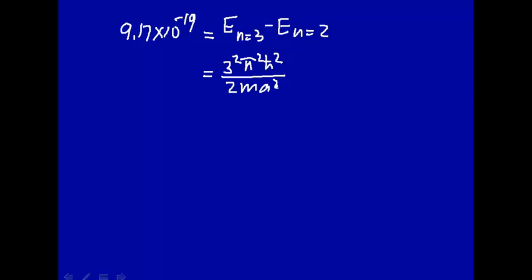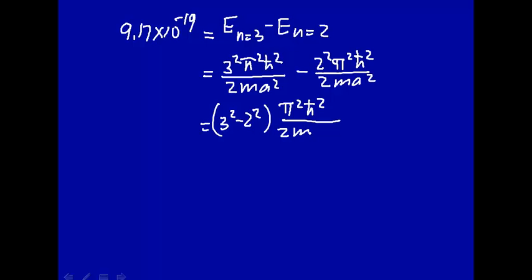So let's go ahead and do that. The experimental energy was 9.17 times 10 to the minus 19th, everything in SI units, so I won't have to carry around the units. That's equal to the energy for n equal 3 minus the energy for n equal 2. That's what we experimentally measured. Let's calculate that from particle-in-a-box. So this would be 3 squared pi squared h-bar squared over 2ma squared minus, for the n equal 2, 2 squared pi squared h-bar squared over 2ma squared. Or in other words, this is 3 squared minus 2 squared times pi squared h-bar squared over 2ma squared.